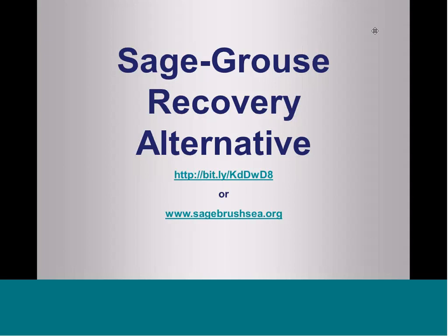Feel free to download the 121-page alternative and comments — read, review, memorize, and share it with your friends and family. It is an important baseline conservation alternative that we can use to measure the BLM's conservation plans for greater sage-grouse. Before turning it over to my colleagues, allow me to address the need for sagebrush reserves for sage-grouse — the second factor I suggested would be key to successful sage-grouse planning.